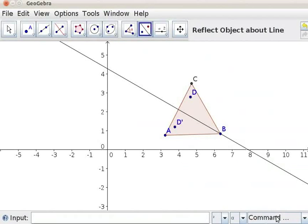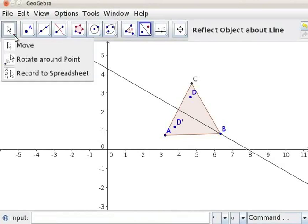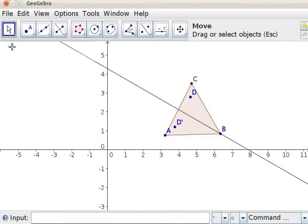Let us move the point D along the triangle using Move tool. Click on the first option under Move tool from the toolbar. Click on the figure with the mouse. Drag it tracing the triangle. Now release the mouse button. What do you notice? Here the Perpendicular Bisector is a line of symmetry. D is the object and D' is the image.